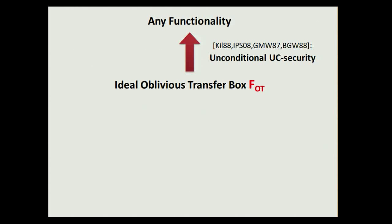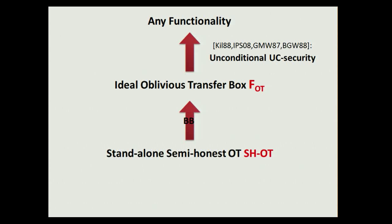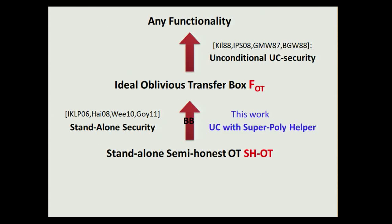How do we do that? The result is achieved in two steps. First, it follows from a classical result that every functionality can be implemented using ideal OT — this step is unconditional and therefore by definition black box, achieving security in the UC model. The main body of the work is really trying to implement OT using a standalone semi-honest OT in a black box way. Previous works achieved this step in the standalone setting; in this work we tackle the concurrent setting and implement OT in the UC with super-polynomial time helper model.